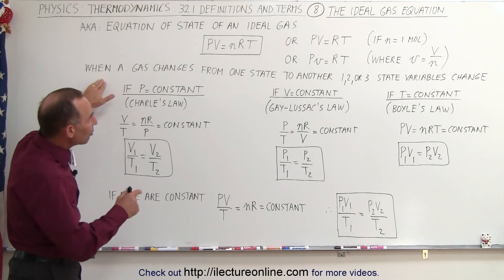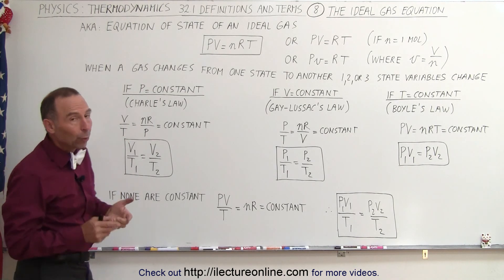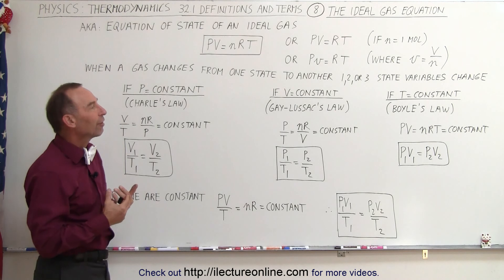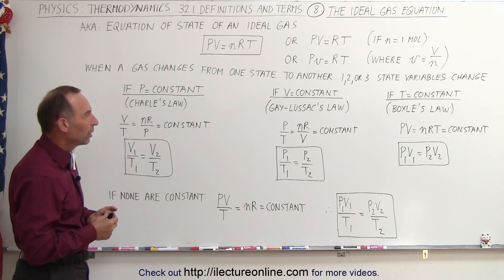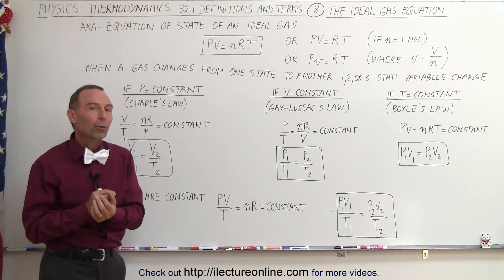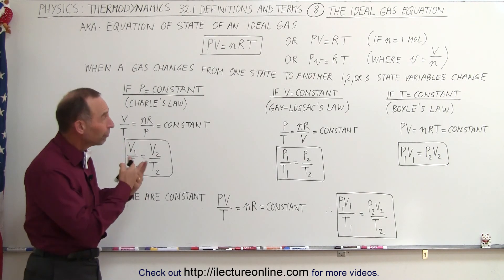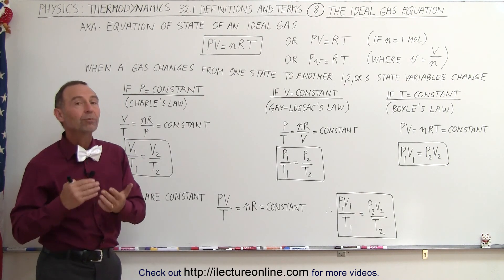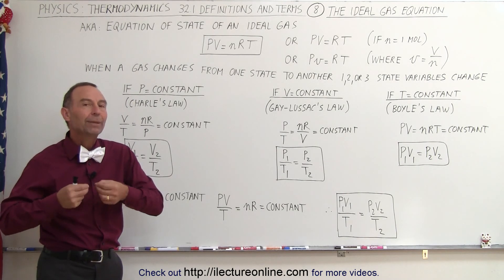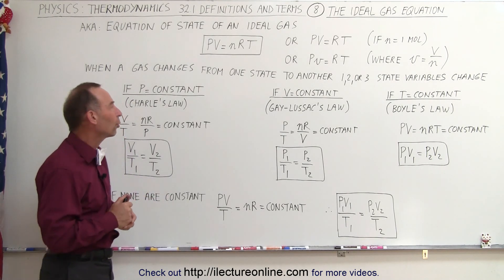When a gas changes from one state to another, either one, two, or all three of the state variables will change. Now there's different situations where one of them will remain constant. Either the pressure remains constant, the volume remains constant, or the temperature remains constant. In each case, it makes it a little bit easier to deal with the ideal gas equation.